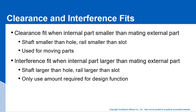Clearance is when an internal part is smaller than the mating external part. When we say clearance fit, the internal part is smaller than the mating part under all tolerance conditions — the shaft will go into the hole with a clearance fit regardless of the tolerance of the individual parts, because it's designed to fit a certain way. With an interference fit, the internal part is larger than the external part — the shaft is bigger than the hole. In some cases, that's desirable. So that's the difference between a clearance and an interference fit.